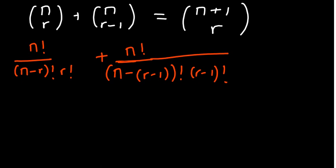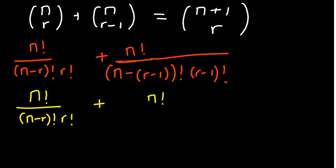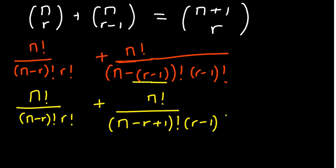So now I can simplify to the next step. We have n factorial over n minus r factorial times r factorial, plus n factorial over n minus r plus 1 factorial times r minus 1 factorial. At this point you've already observed something common about what we have.